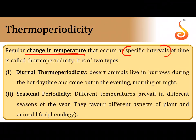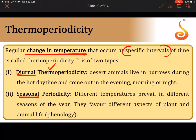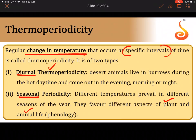Thermoperiodicity refers to changes in temperature that occur at specific intervals of time, following a periodic or cyclical pattern. Diurnal thermoperiodicity refers to temperature changes during day and night — temperatures are high during the day and low during the night. Seasonal periodicity refers to temperature fluctuations that last for an entire season, like high summer temperatures and low winter temperatures. These fluctuations favor different aspects of plant and animal life — flowering, fruiting, migration, and reproduction — and that is referred to as phenology.